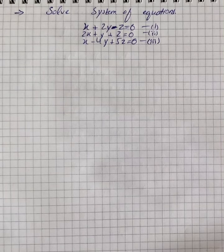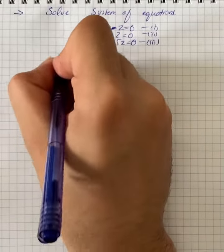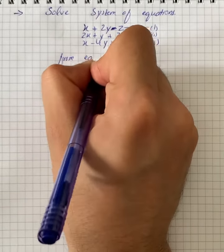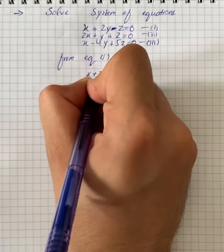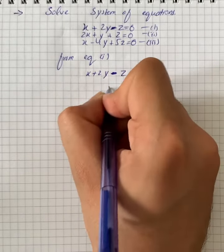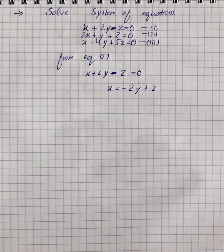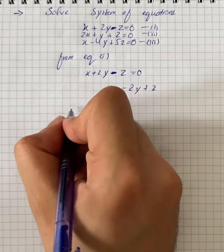Here we have to solve the system of equations. Name the equations as 1, 2, and 3. From equation 1, we have x plus 2y minus z equals 0, so x equals minus 2y plus z. Now substitute the value of x in equations 2 and 3.